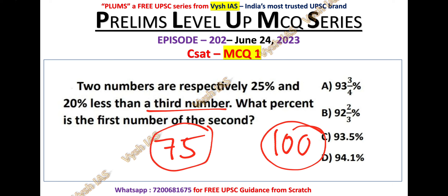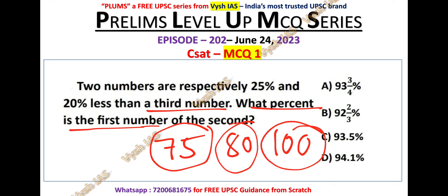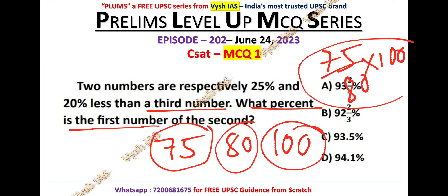The second number is 20% less than 100, so it is 80. Now they have asked what percent is the first number of the second? So we calculate: first number is 75, second number is 80, so we compute 75 divided by 80 into 100.